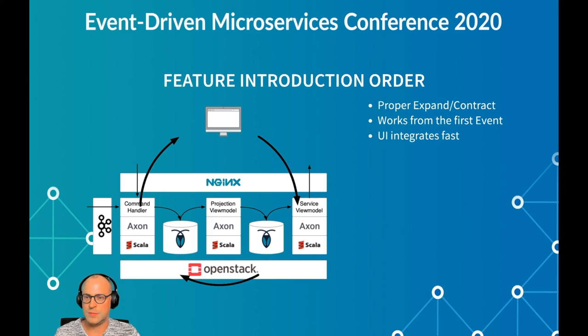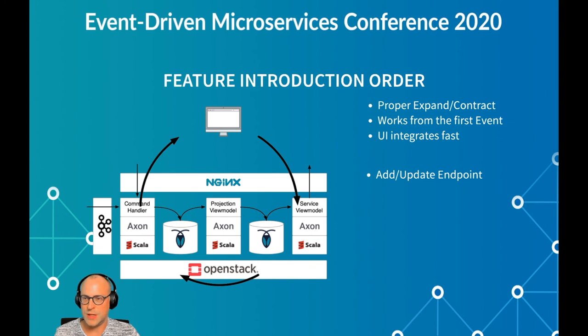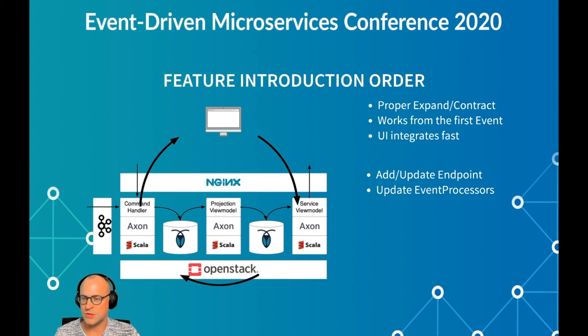This has been rather successful for us — it feels like a proper expand-contract method. We build parts of a system capable of handling situations where supplying parties aren't yet supplying new things. One of the biggest advantages is it works from the very first event emitted by the new feature. Since we've already built the view model service and projection ahead of the command handling and event emission, as soon as the first client sends a command, the entire chain is operational. The user interface can also integrate fast using mocks or default responses to develop the new data presentation.